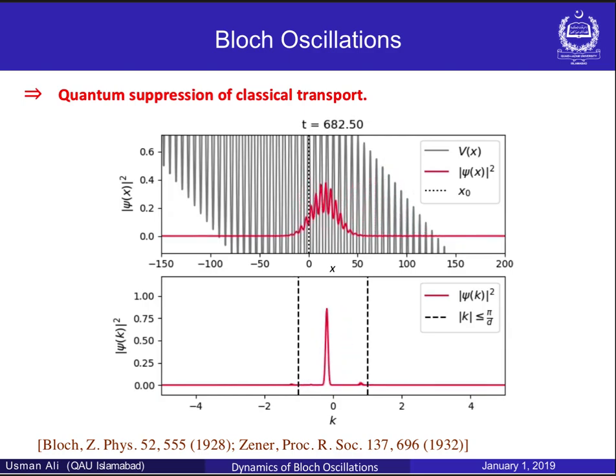This periodic modulation of the particle's mean position and momentum is known as Bloch oscillations, first described by Bloch and extended by Zener. This is a purely quantum phenomenon where the classically accelerated transport expected on tilted surfaces is suppressed.